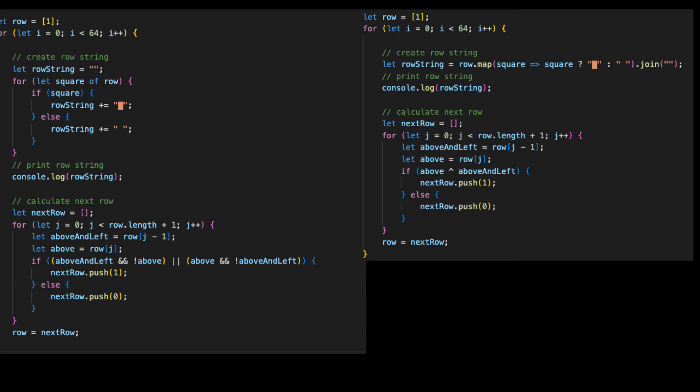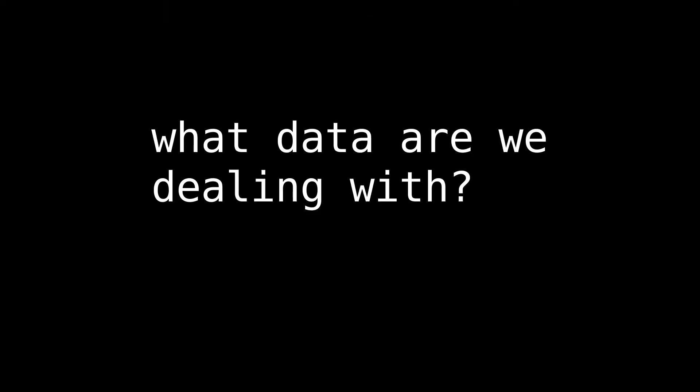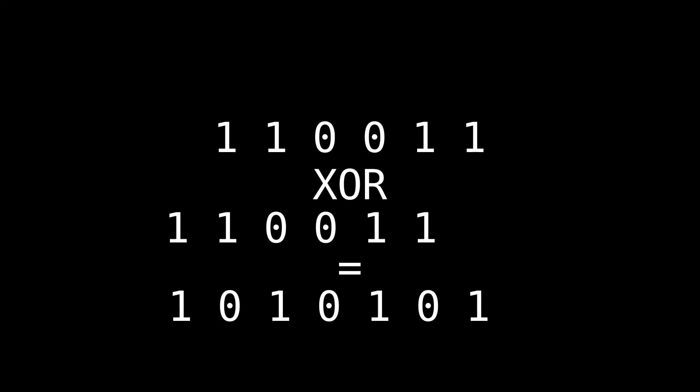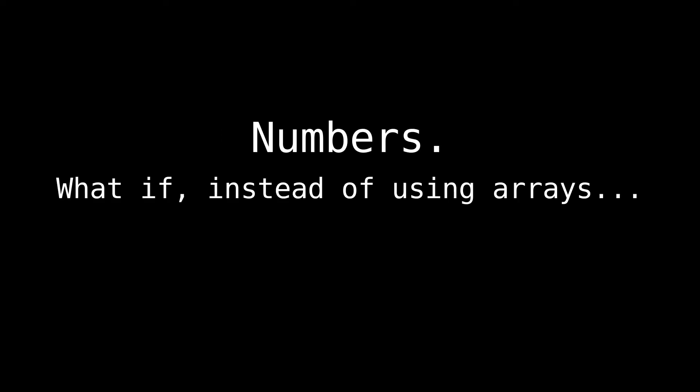Now look at how much we've condensed this section. Here's where we are now compared to what we had before. However, if the title of this video is anything to go by, we're just getting started. To go further, let's consider what data we're dealing with. Each row is represented as a list of zeros and ones, where a one is filled and a zero is empty. We get the next row by XOR-ing each list element with the list element to the left of it. Now, what other kind of data is represented as a list of ones and zeros on a computer? Numbers. What if instead of representing each row as an array of ones and zeros, we represent each row as a number, which is itself under the hood just an array of ones and zeros?